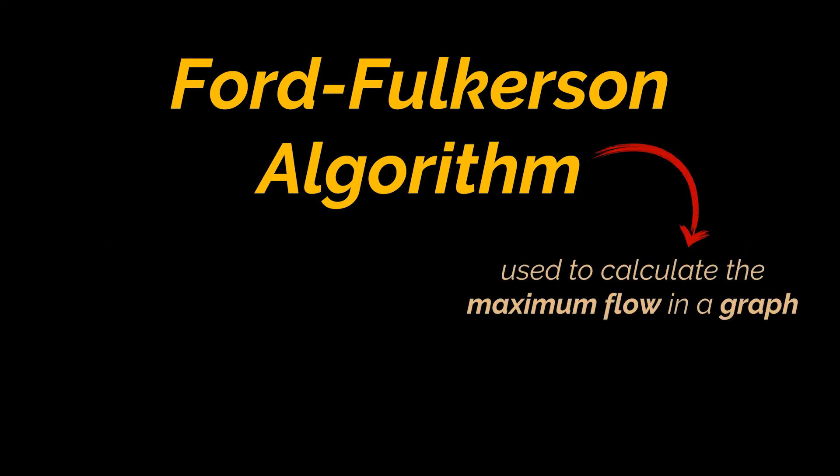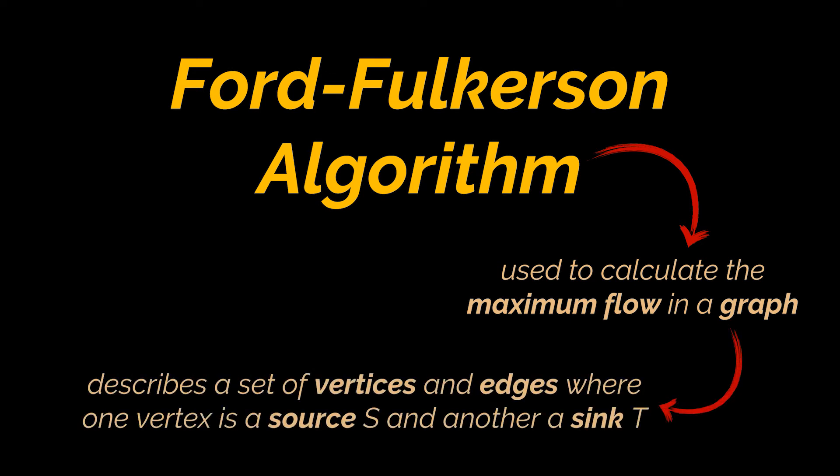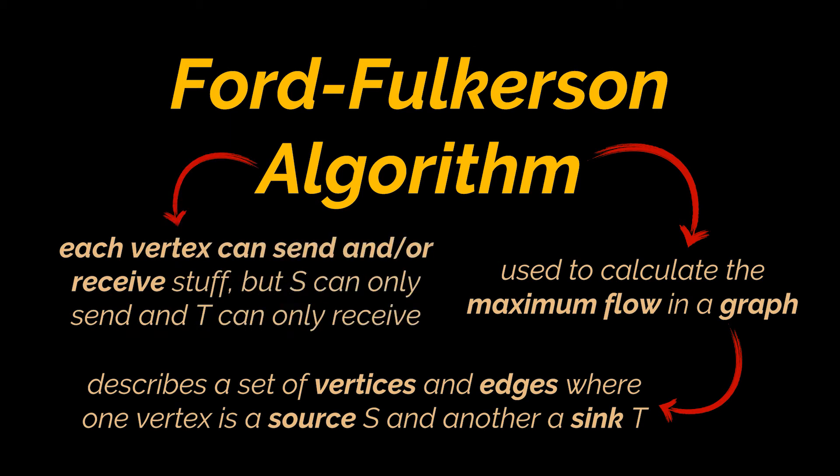This algorithm is used for calculating the maximum possible flow in a graph. The term flow graph is used to describe a set of vertices and edges where one of these vertices is a source S and another is sink T. Each vertex except S and T can send and or receive stuff through them. S can only send and T can only receive stuff.